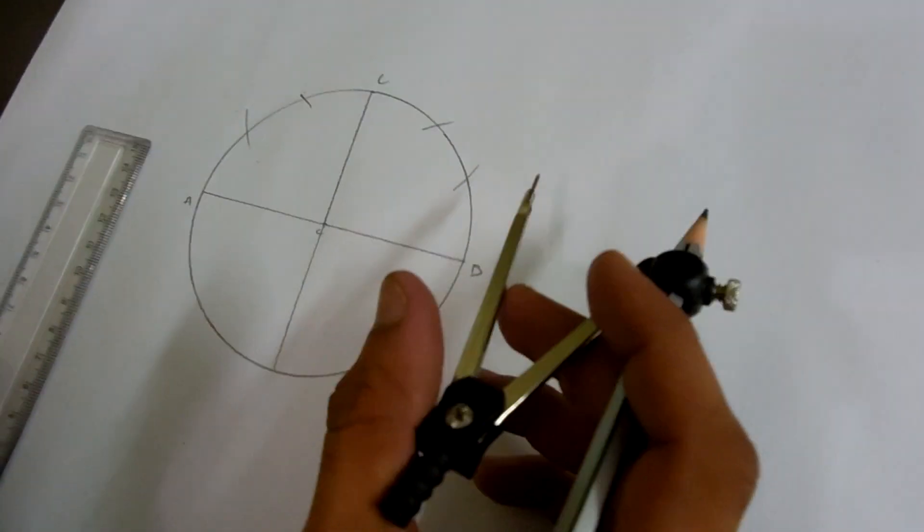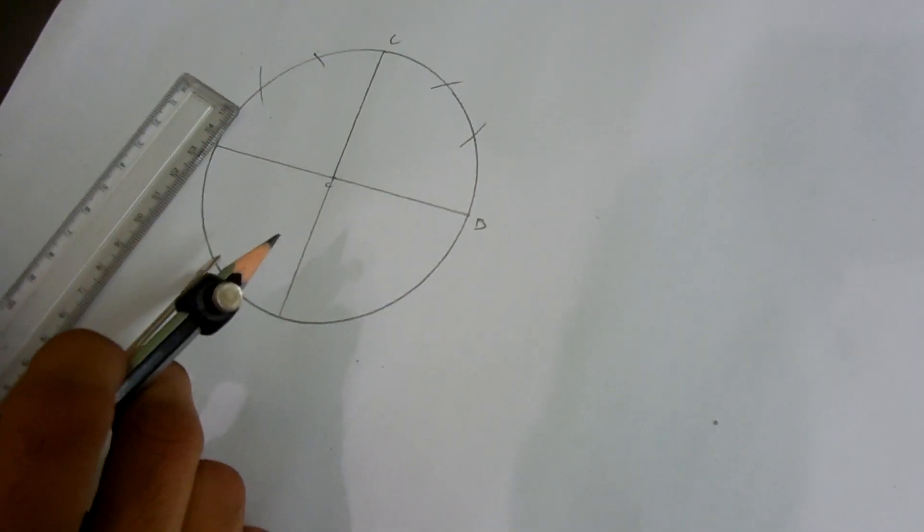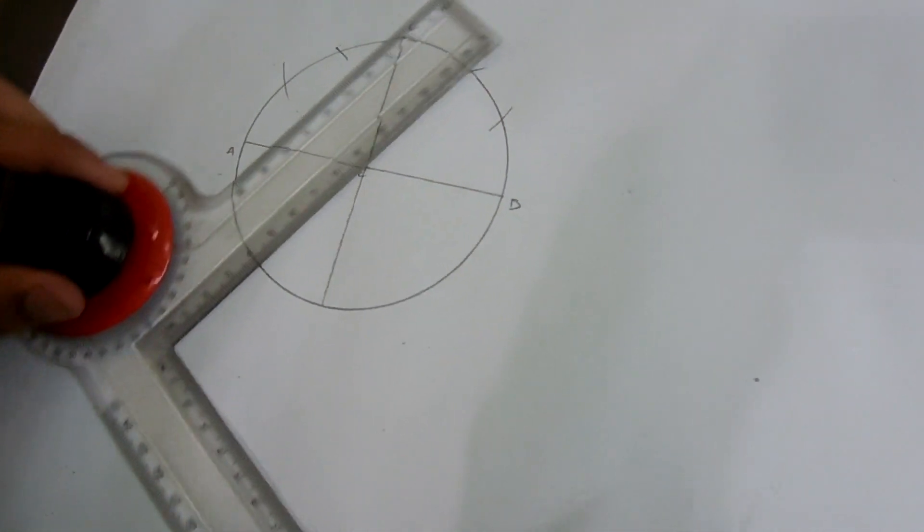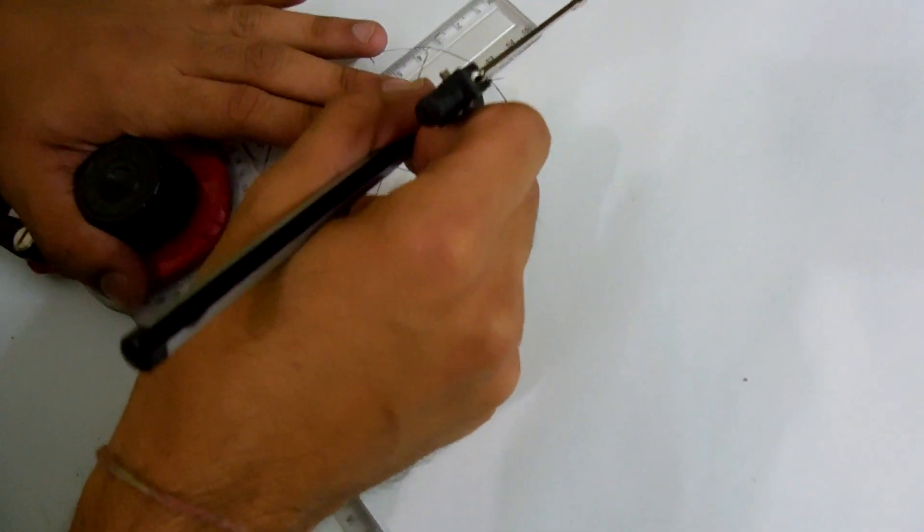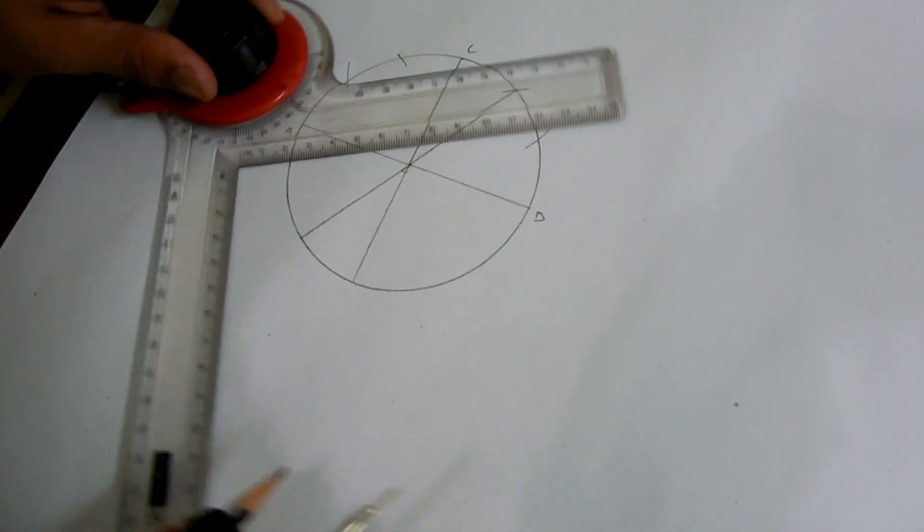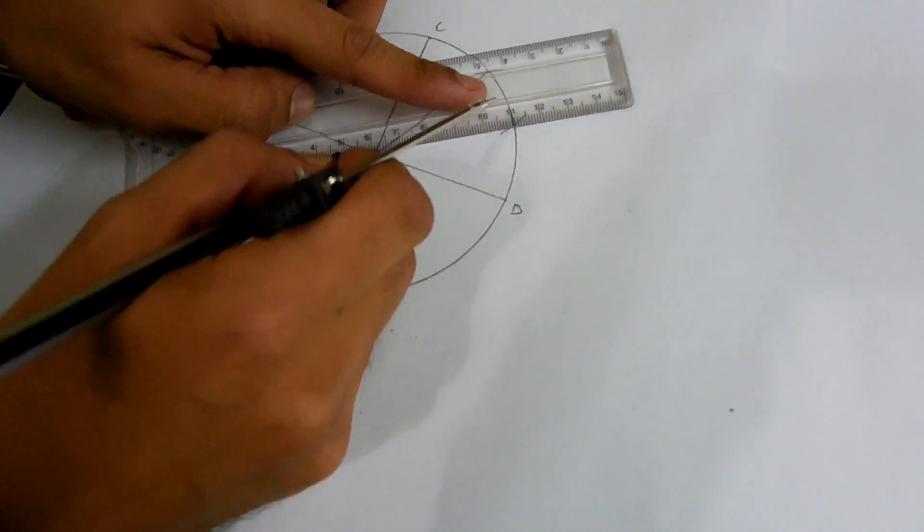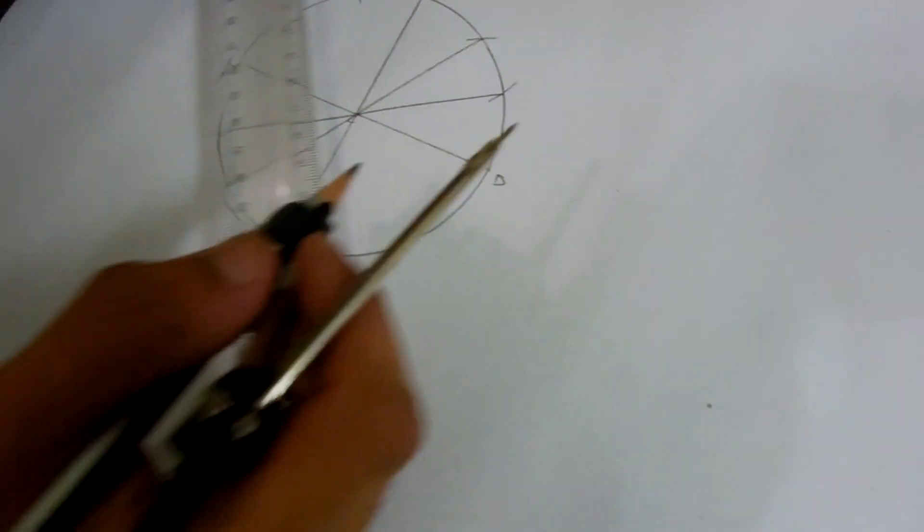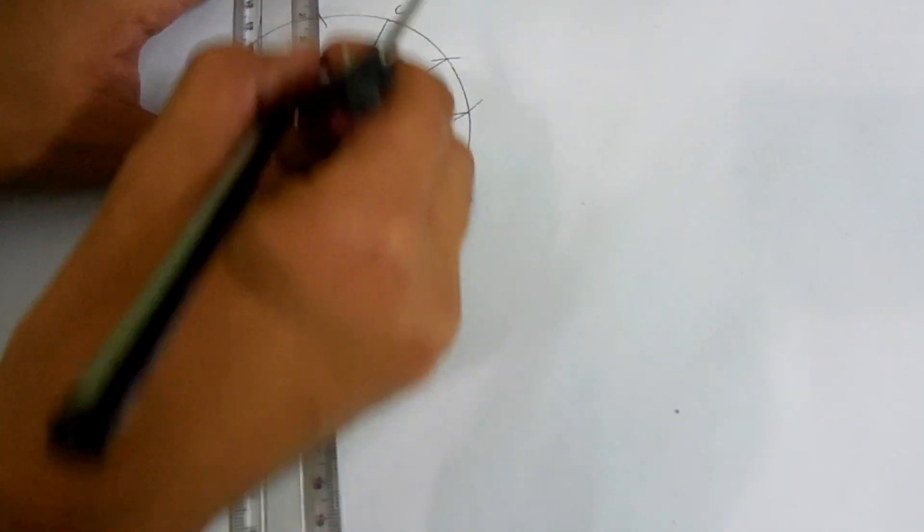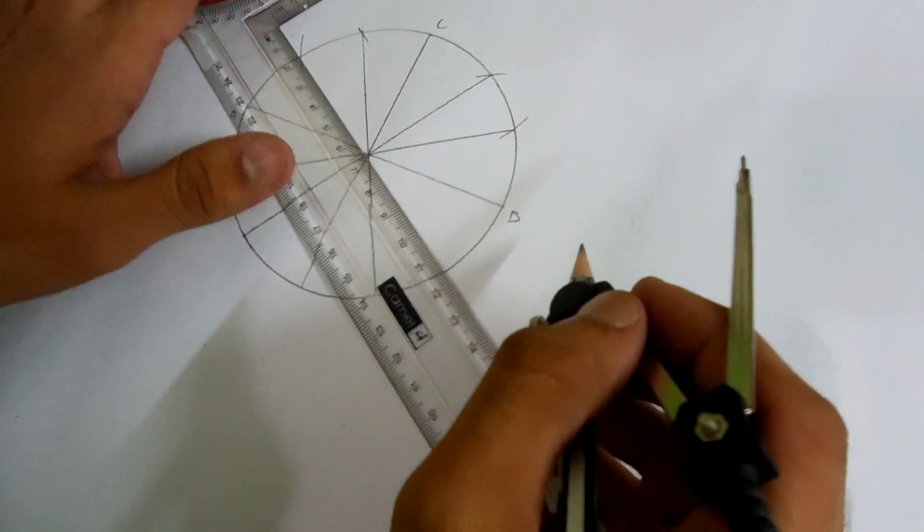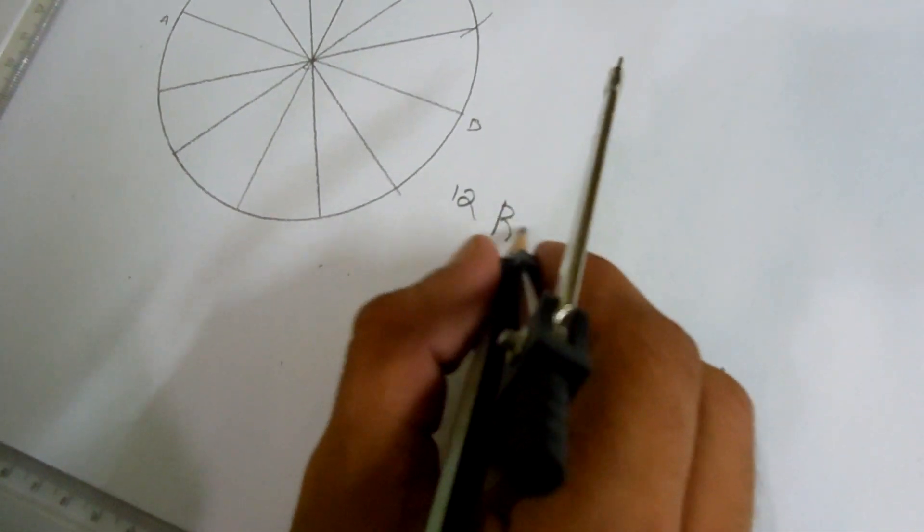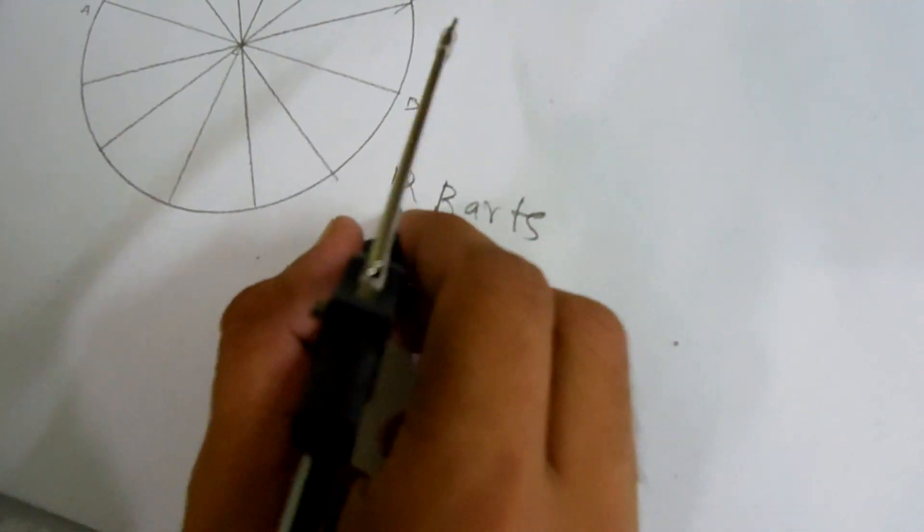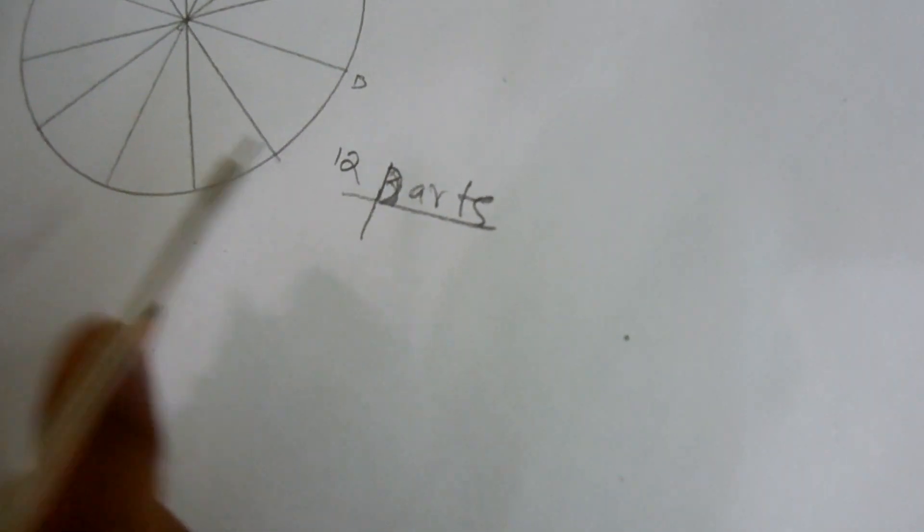We are making six divisions here. As we extend these lines at another part of the semicircle, we'll get both equally divided. Then we are joining C and D, extending it to the circle. Yes, we got equally 12 divided parts.